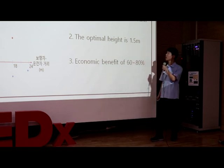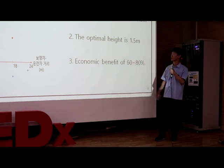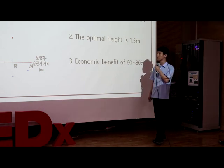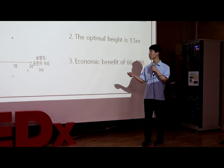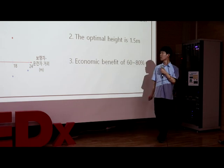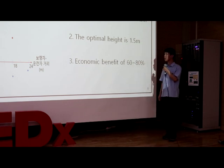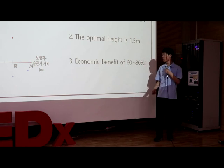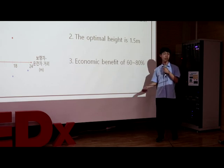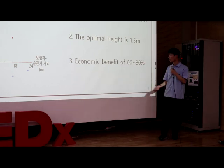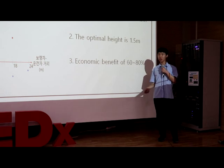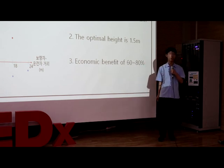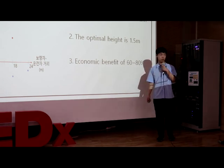Now, lastly, I'll tell you our project conclusion. First, the optimal distance between the light and the pedestrian is 10.5 meters. Second, the optimal height of the light is 1.5 meters. Third, when using our light, this can result in an economic benefit of 60 to 80% compared with the installation cost of existing lights. Thank you so much.